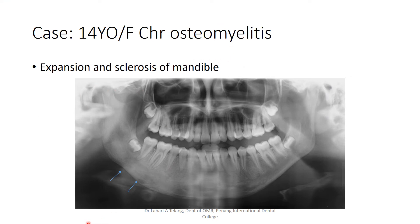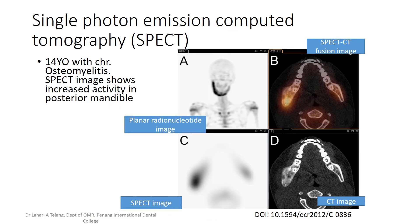Here is a case of a 14-year-old female patient with chronic osteomyelitis. On the panoramic radiograph, we can see expansion and sclerosis of the mandible on one side — compared to the other side, which appears normal. The osteomyelitic region is not very obvious on the panoramic radiograph, which is why this patient was subjected to SPECT (single photon emission computed tomography). SPECT shows increased activity in the posterior mandible. When the CT scan and SPECT images were fused, the exact location of the disease was clearly identified.